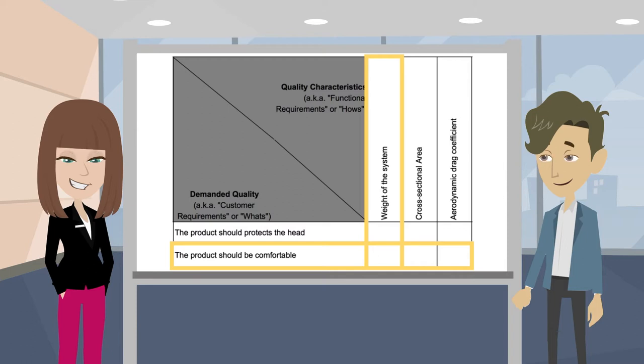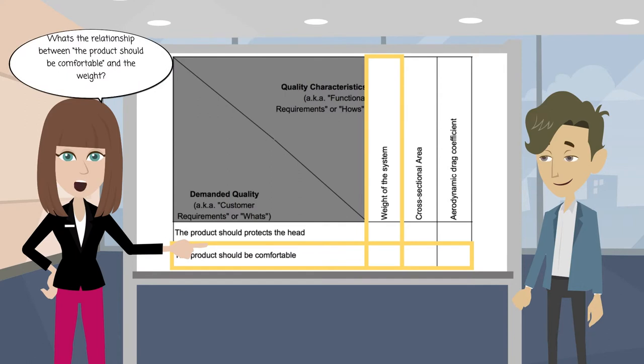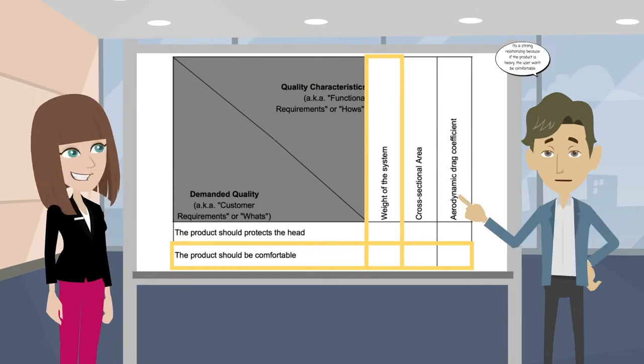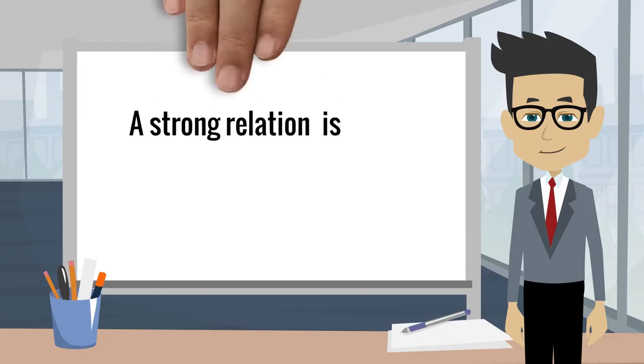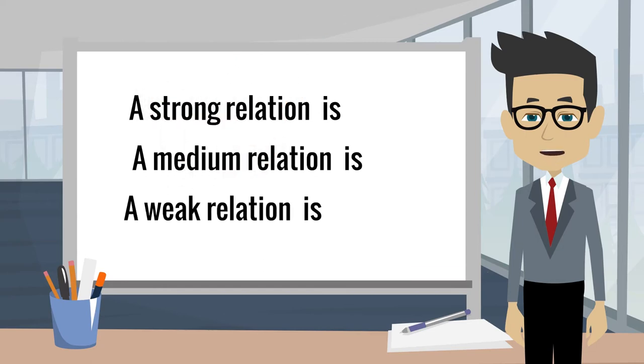Once you have defined the what's and the how's, you have to analyze and determine the relations. What's the relationship between 'the product should be comfortable' and the weight? It's a strong relationship because if the product is heavy, the user won't be comfortable. You should keep in mind the meaning of the different icons. For example, a strong relation is this icon, a medium relation is the simple circle, and a weak relation is the triangle.